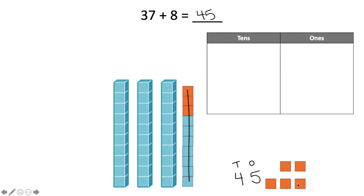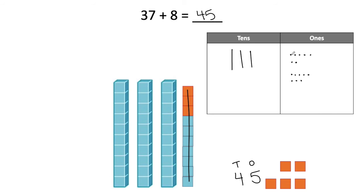Let me show you what I did with my quick tens and ones. I started with 37, which had three tens and seven ones. Then I was adding eight, and I know that eight is eight single ones, so I added eight ones like this. Then I started in the smallest place value, which was the ones, and counted how many I had. Count with me: one, two, three, four, five, six, seven, eight, nine, ten, eleven, twelve, thirteen, fourteen, fifteen. I had 15 ones.